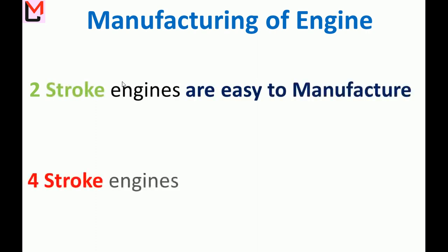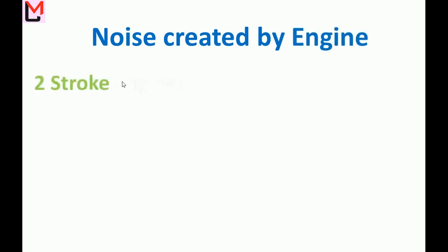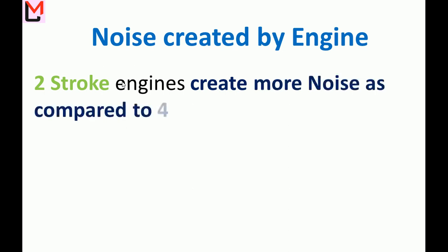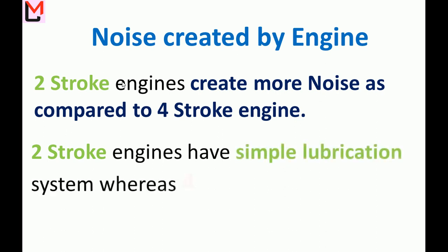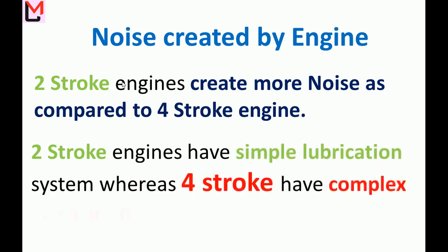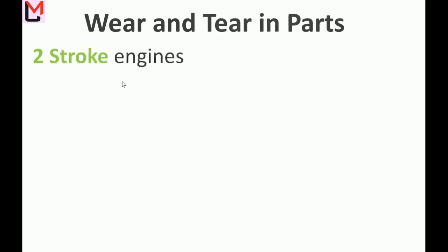Four-stroke engines are hard to manufacture. Noise: Two-stroke engines create more noise compared to four-stroke engines. Two-stroke engines have a simple lubrication system, whereas four-stroke engines have a complex lubrication system.